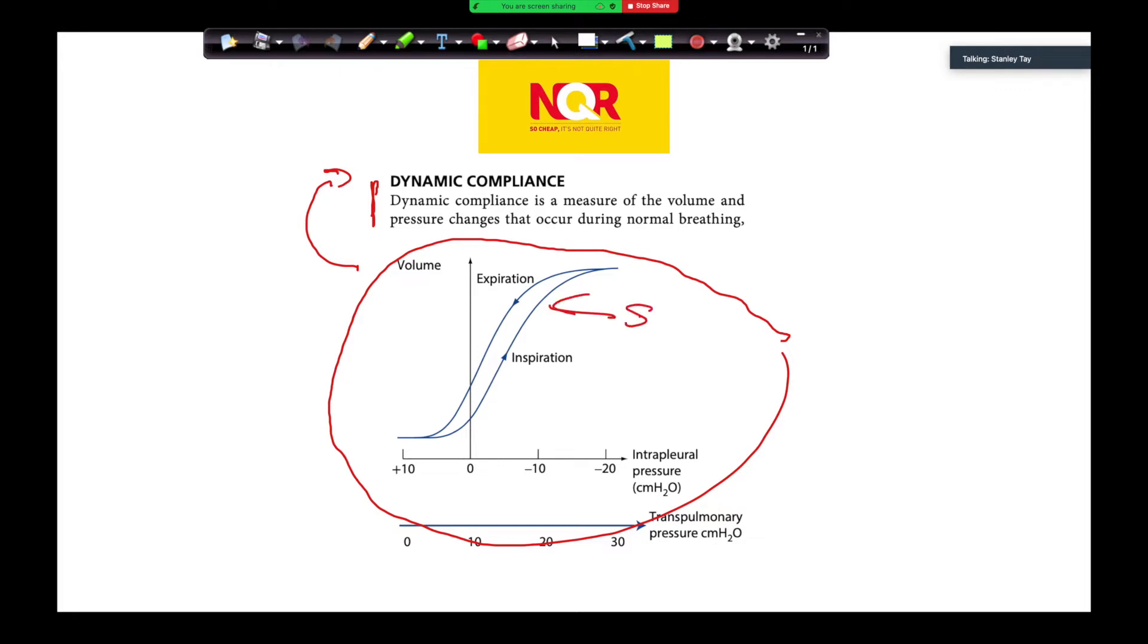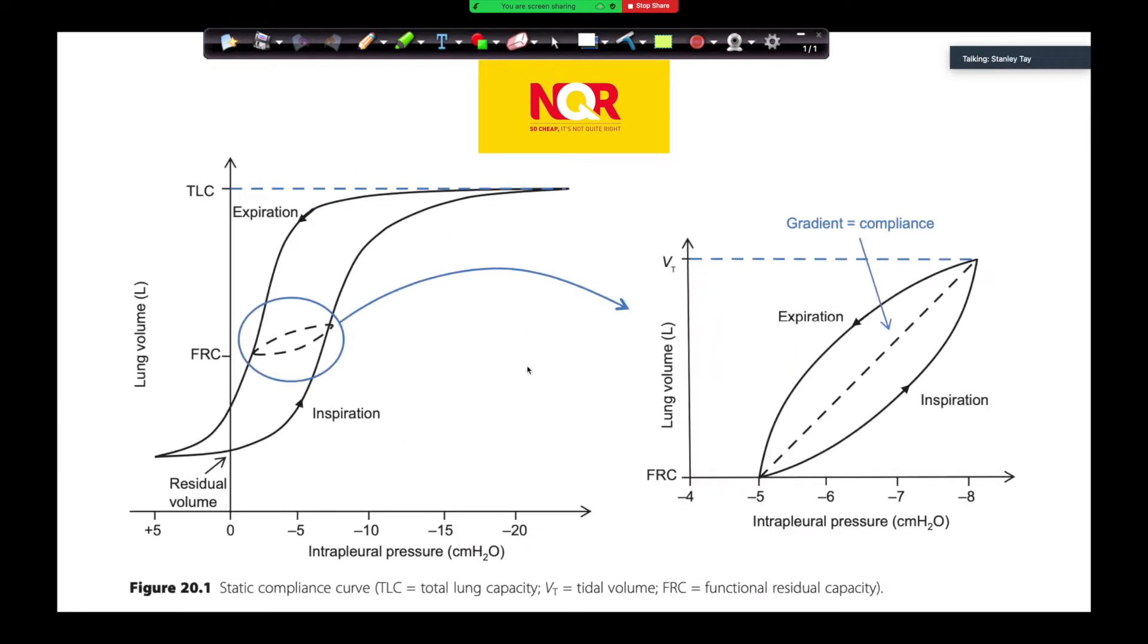This is more a static compliance curve. This is the graph from Chambers. And this is why this graph here is confusing because they've drawn the static compliance curve correctly. And remember what I said, static compliance curve, residual volume to total lung capacity. And they have the intrapleural pressure here. And what they've done is said that from here to here represents your compliance. So this is not fully understanding how the experiment works.